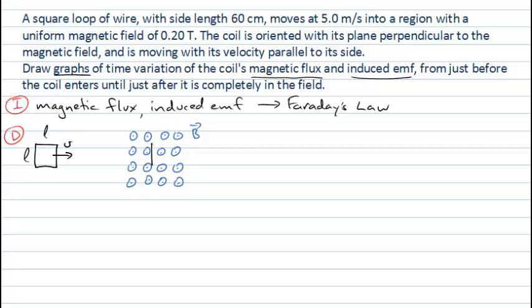At some point later the coil might be within the magnetic field. An interesting thing to consider is the moment at which it starts to enter that field. I'll label three situations: the coil well outside the field — situation A; the coil just starting to enter the field — situation B; and the coil completely contained within the field — situation C. I'll label time zero as just when the coil is starting to enter the field.